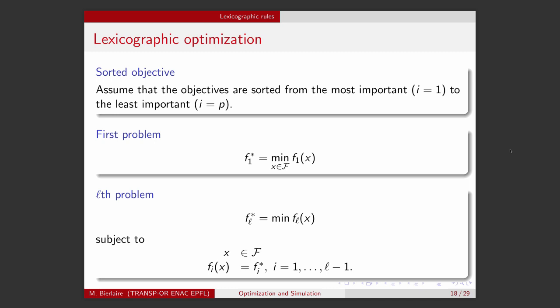We first optimize the first objective. So, we find the vector x that minimizes f of one over the feasible set. And the optimal solution is associated with the value of the function, which is f one star.